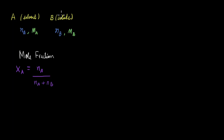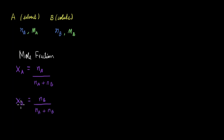Here, because there is only one solute, the total number of moles will be NA plus NB. If there were two solutes B and C, this total becomes NA plus NB plus NC — so this denominator is the total number of moles. Similarly, the mole fraction of B, denoted XB, equals NB divided by the total number of moles, NA plus NB.